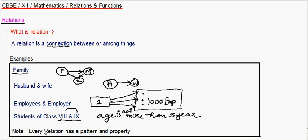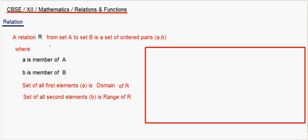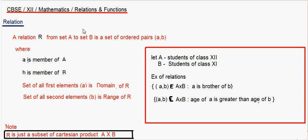You have to remember that each and every relation has a pattern. For example, family has a pattern, and if you take employee and employer of any organization, each relation has a pattern. We will see what are the different properties in a further class. So now let's move on to a relation in the mathematical field — how we denote a relation in the mathematical world.